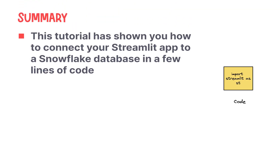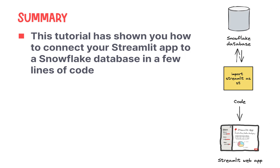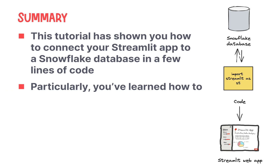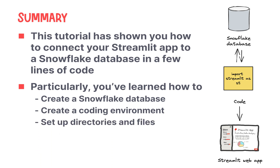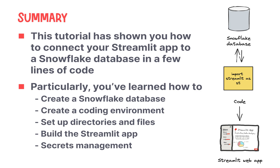In summary, this tutorial has shown you how to connect your Streamlit app to a Snowflake database in a few lines of code. Particularly, you've learned how to create a Snowflake database, create a coding environment, set up directories and files, build the Streamlit app, manage secrets, and how to launch the app.